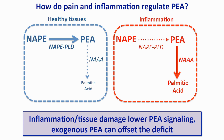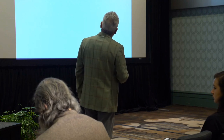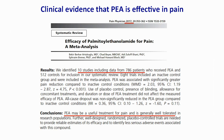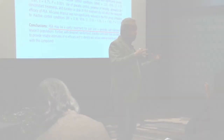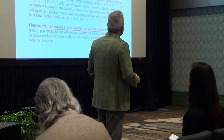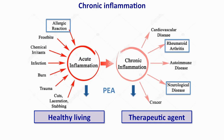Does it really work in humans? A very recent 2017 paper published by a group in Israel performed a meta-analysis of the efficacy of PEA. These investigators looked back at the literature, found 10 studies — eight of which were included in their report — and compared results. Their conclusion: PEA may be a useful treatment for pain and is generally well tolerated. That's an important initial clinical support of the idea that PEA is an endogenous anti-inflammatory and analgesic compound. The authors also conclude that more studies are needed.